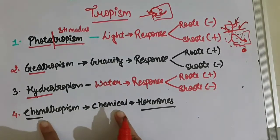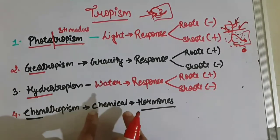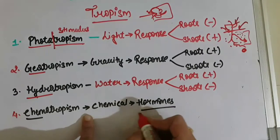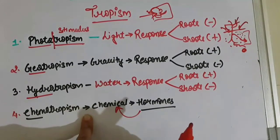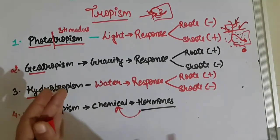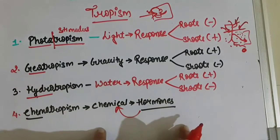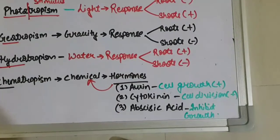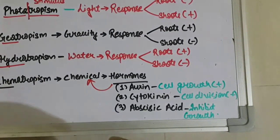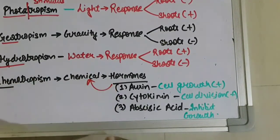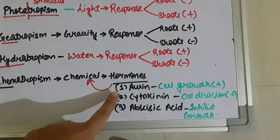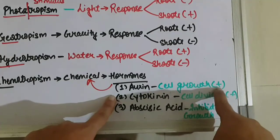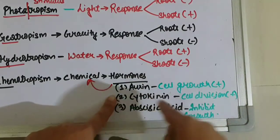The last type is chemotropism, which is related to chemical stimulus — specifically plant hormones. Hormones are chemical messengers that transmit chemicals and send messages from one part of the body to the target site. Plants have different categories of hormones performing different functions. One example is auxin, a plant hormone that promotes cell growth — it allows cells to grow.